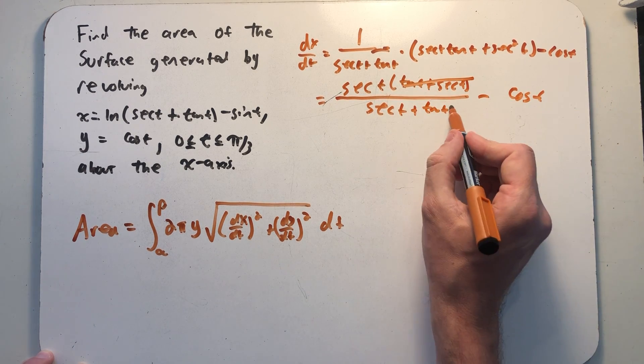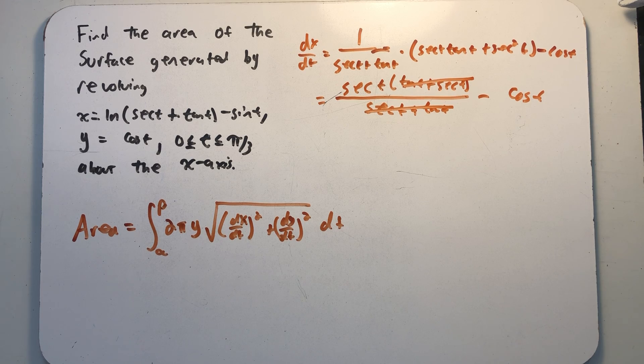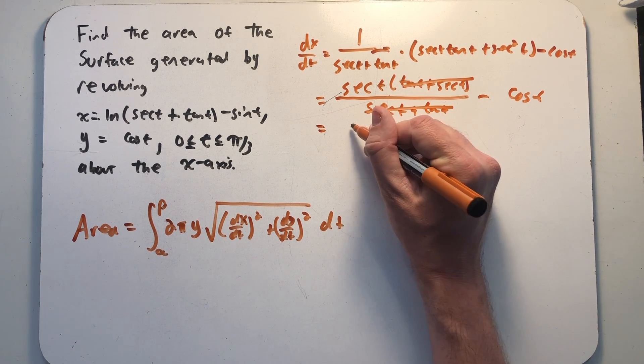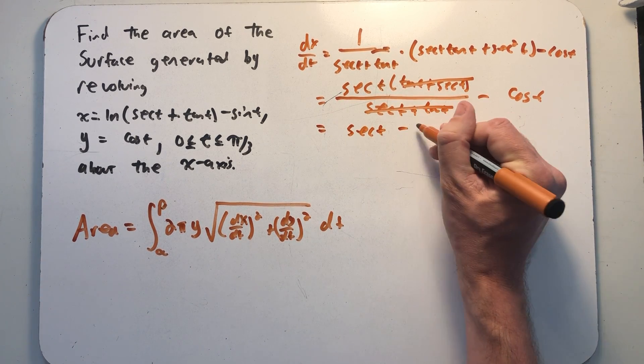I have a secant t plus a tangent t in both places, and those cancel, and so dx/dt is just secant minus cosine.